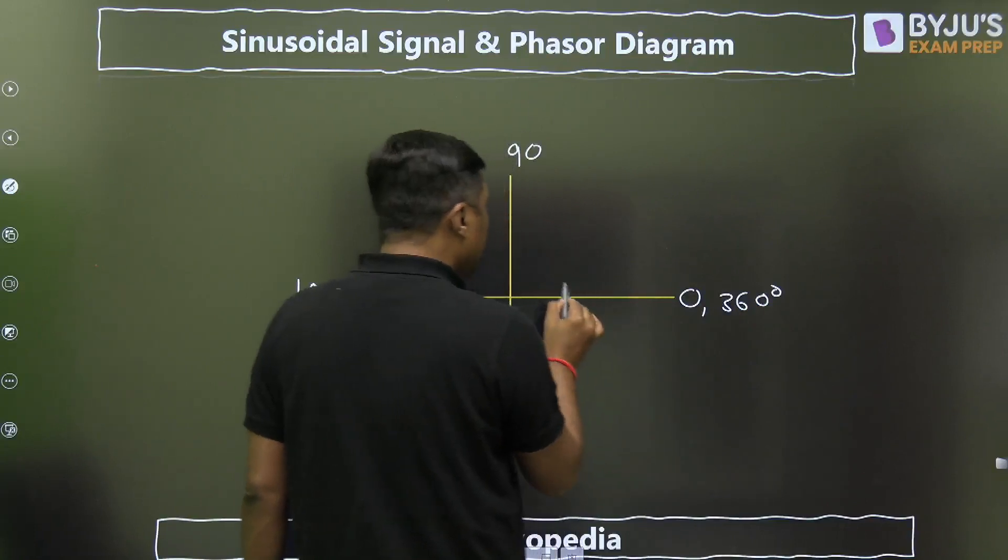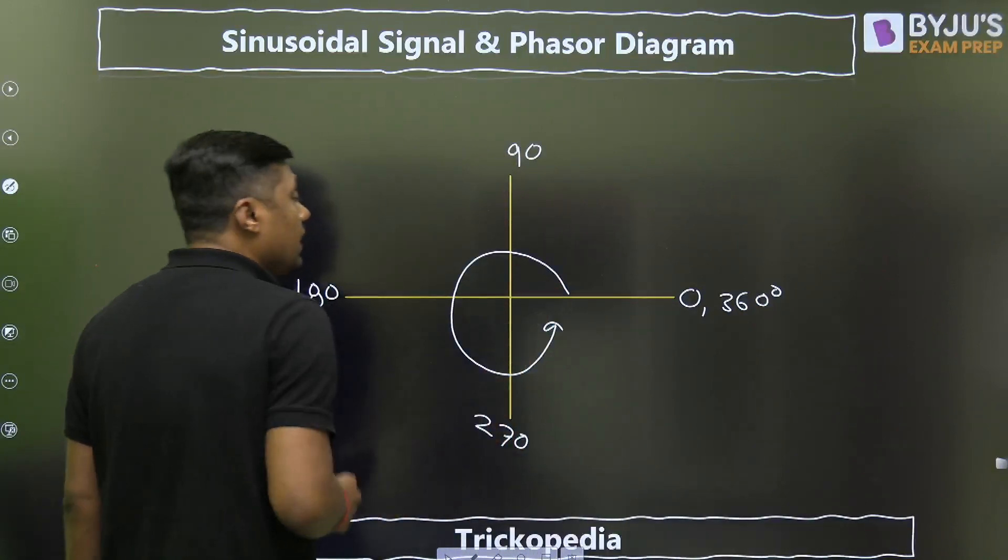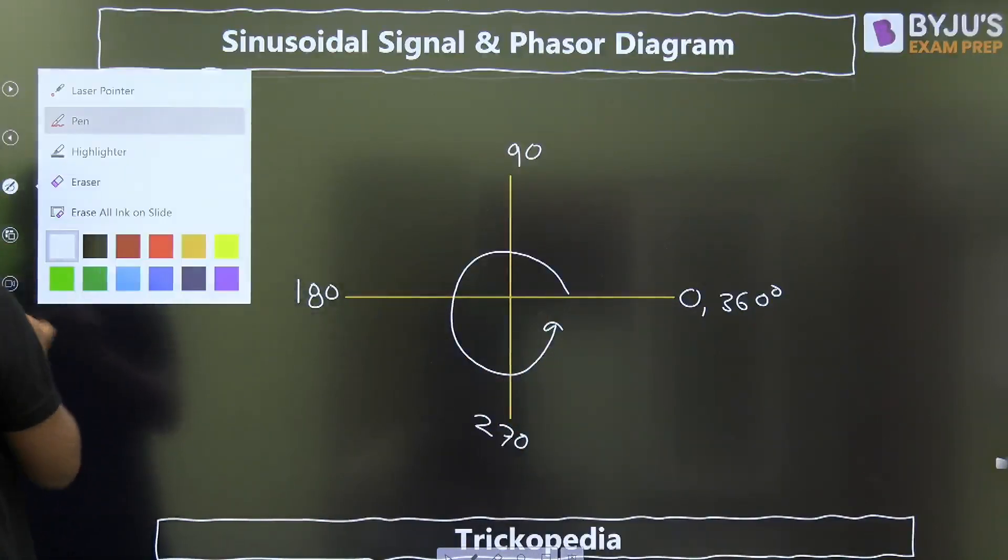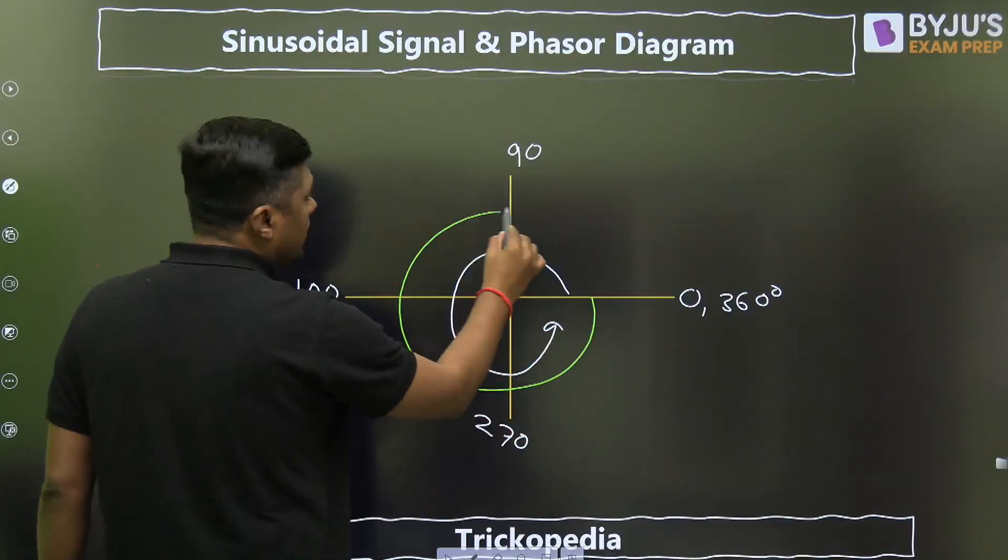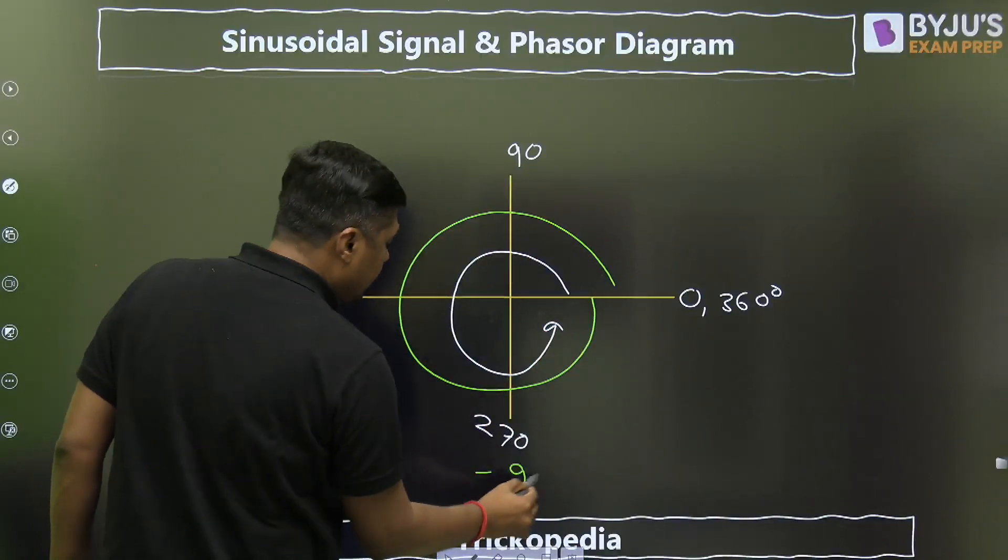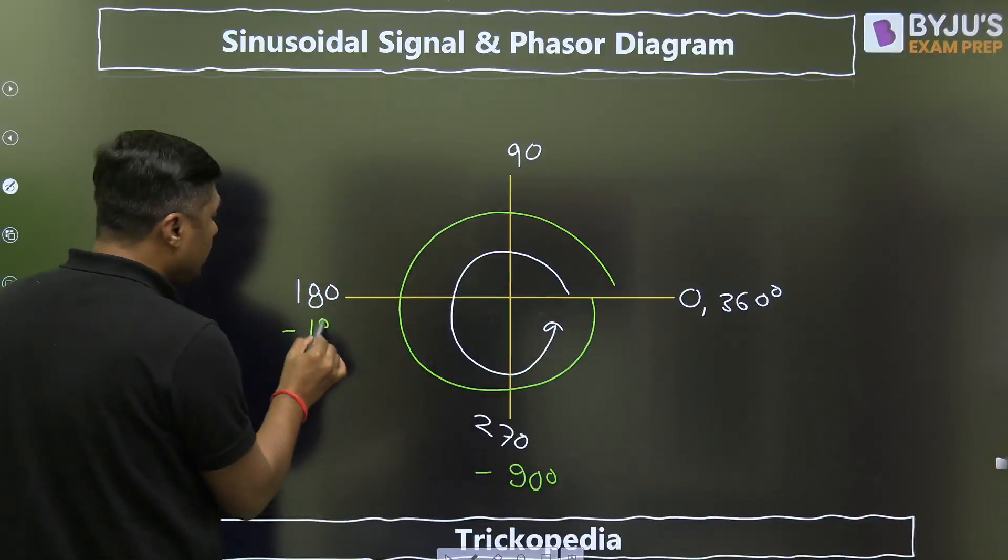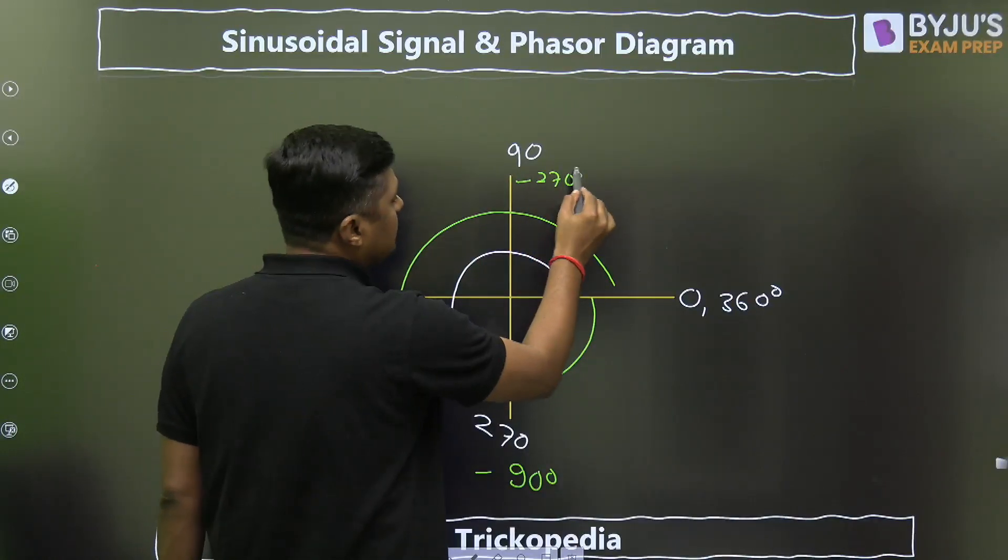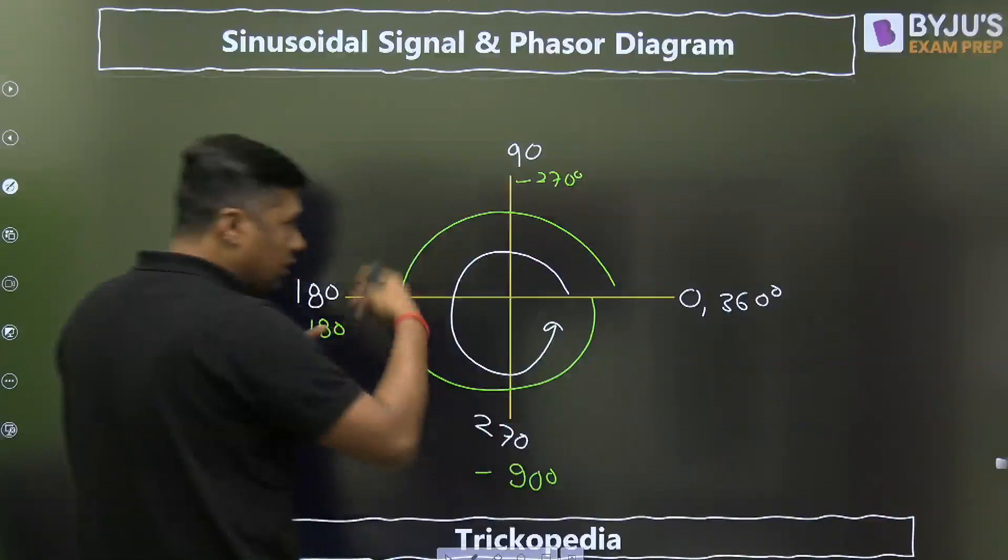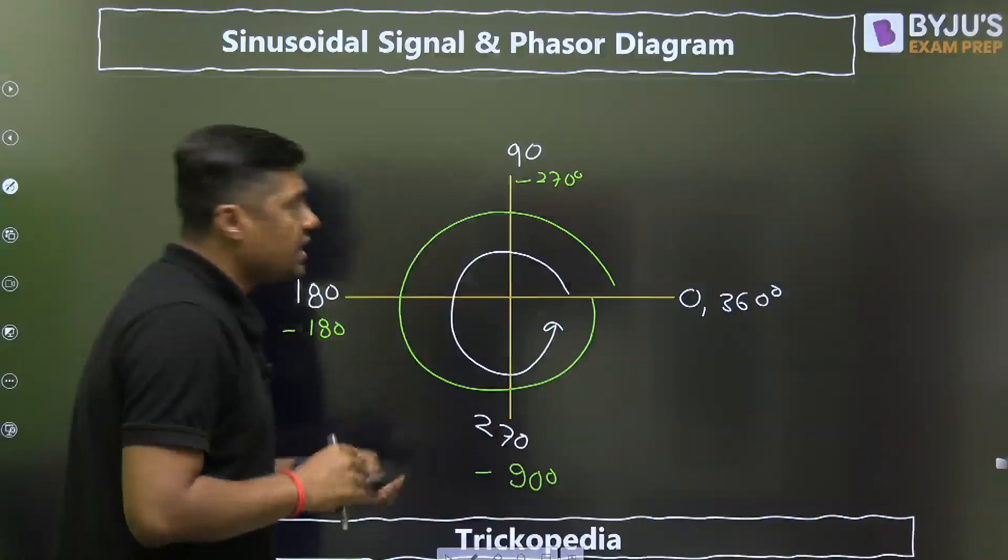If suppose we are moving in the clockwise direction, then in clockwise direction it will become minus 90 degrees, it will become minus 180 degrees, it will become minus 270 degrees, and this will become again 0. So that is anti-clockwise direction and clockwise direction.